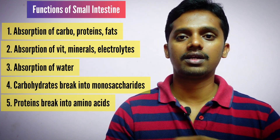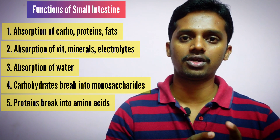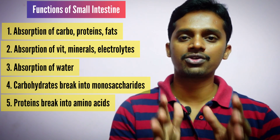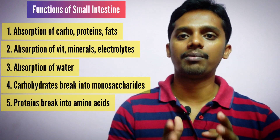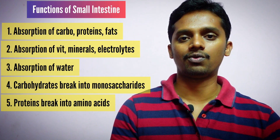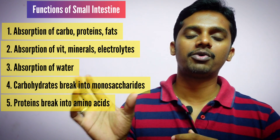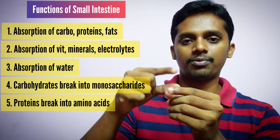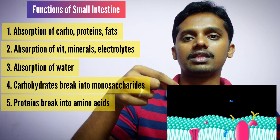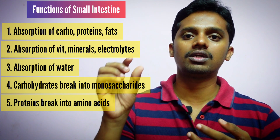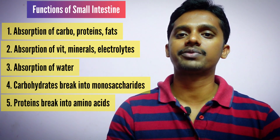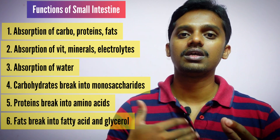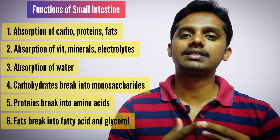Proteins are broken down into amino acids or small peptides before absorption. So just as carbohydrates become simple sugars, proteins become amino acids. Similarly, fats are broken down into fatty acids and glycerol before they are absorbed in the small intestine.